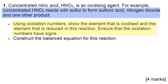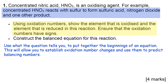The part of the description that's of use to us is where it starts saying what chemicals react with what. Using that limited information you can put together the beginnings of an equation, which will allow you to establish oxidation number changes and use these to predict balancing numbers.